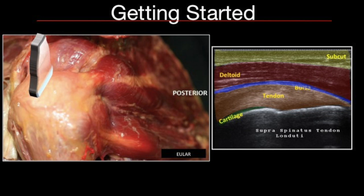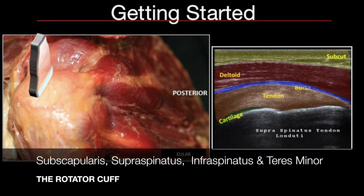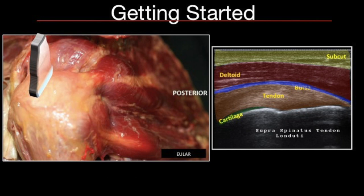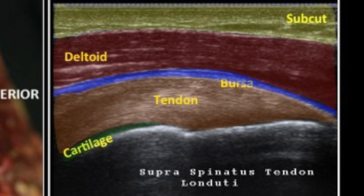A quick recap of anatomy: the rotator cuff is formed by the subscapularis, the supraspinatus, infraspinatus, and the teres minor tendons from the anterior to posterior direction. These tendons attach to the greater tuberosity. When you start doing shoulder ultrasound, get into the habit of counting the layers from the top — a series of layers extending from the skin surface all the way to the humeral cortex, visible in both long and short axis.